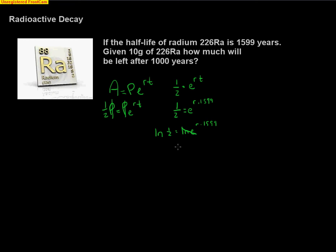When you do that, the natural log and the e simplify to just one and that power property can come down. So I'll have the natural log of 0.5, one half point five same thing, equals r times 1599.